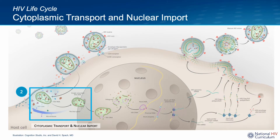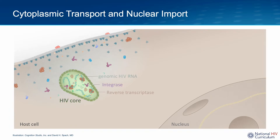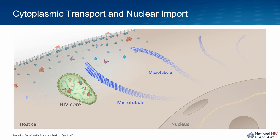Let's look at the next step in the HIV life cycle: the cytoplasmic transport and nuclear import of the HIV core. Until recently, it was thought the HIV core dissolved soon after entering the host cell cytoplasm. Current research suggests the HIV core usually remains intact or mostly intact until after entering the host cell nucleus. Key components inside the core that need to be delivered into the nucleus include the genomic HIV RNA and the HIV enzymes integrase and reverse transcriptase. The cytoplasmic transport of the HIV core to the nucleus utilizes the host microtubule system.